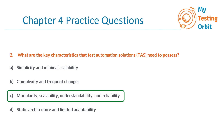The correct option is C: Modularity, scalability, understandability, and reliability. The key characteristics that TAS need to possess include modularity for ease of maintenance and flexibility, scalability to handle various testing scenarios, understandability to facilitate effective usage and maintenance, and reliability to ensure consistent test results. These practices align with the best practices in test automation.